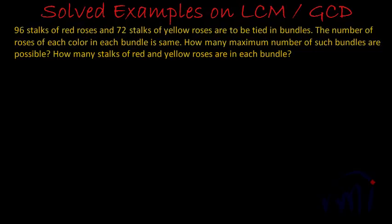So we have to find the maximum number of bundles where we can have same number of red roses and same number of yellow roses in each bundle. How many stalks of red and yellow roses are in each bundle?